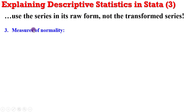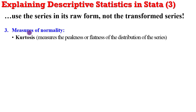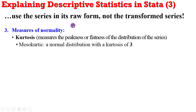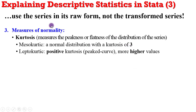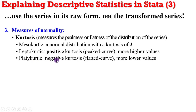Next is information on measures of normality — we are looking at kurtosis and skewness. Kurtosis tells you the peakness and flatness of the distribution in relation to that particular series. If a series is mesokurtic, it embodies a normal distribution with a kurtosis of three. If it's leptokurtic, it has a positive kurtosis — it is peaked, indicating more higher values above the sample average. And if it's platykurtic, it has negative kurtosis — a flattened curve indicating more lower values below the sample average.